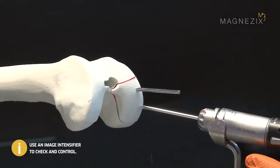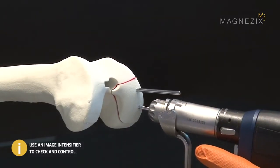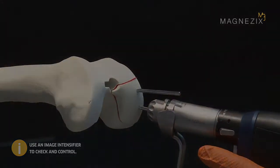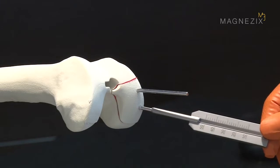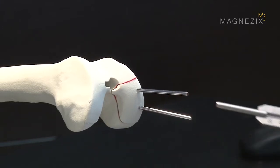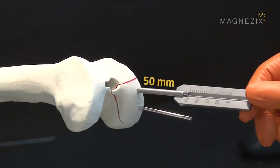If necessary, use an image intensifier to check the depth of the wire. The depth of the reduction wires is determined using the measuring device. In our case, the length for both pins is 50 mm.